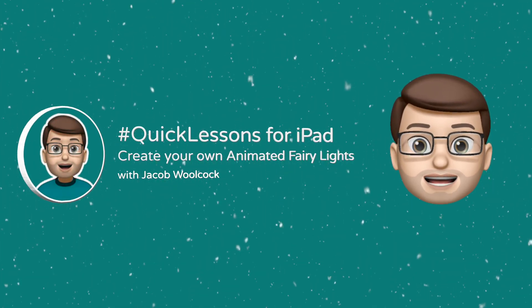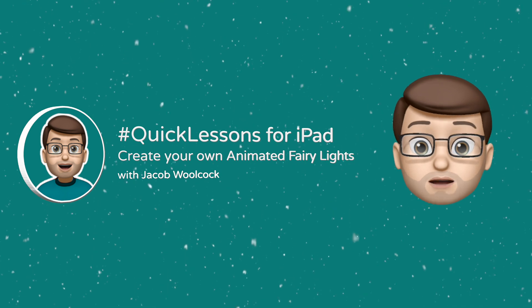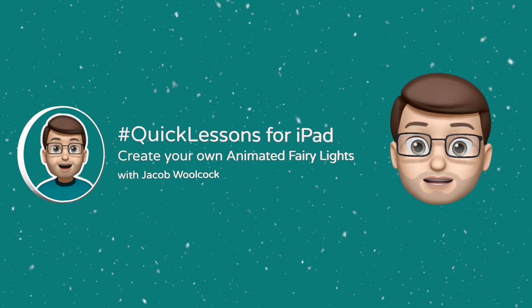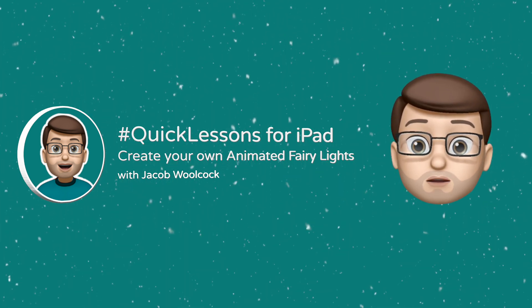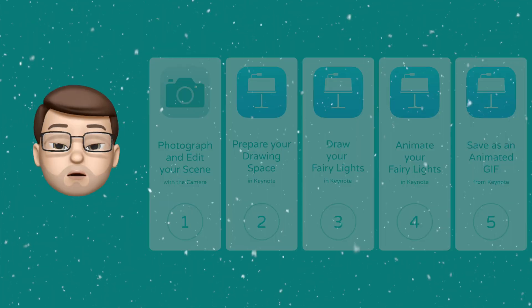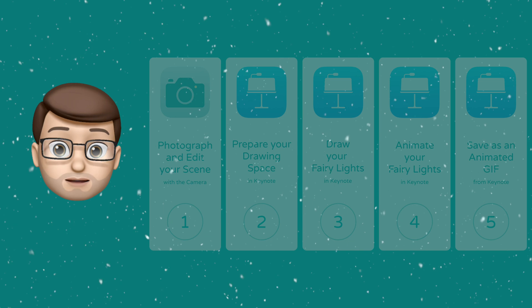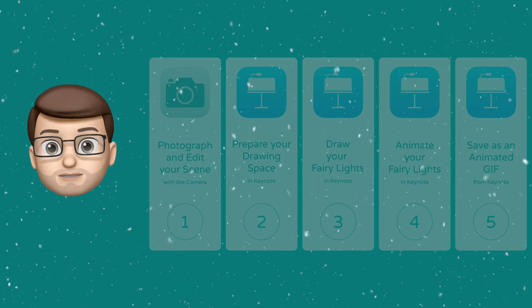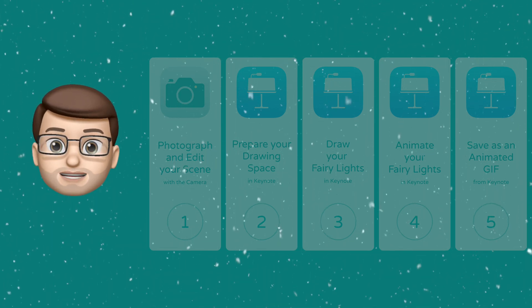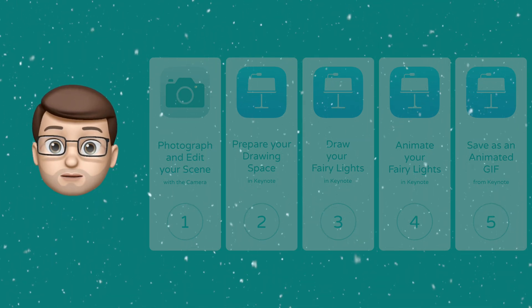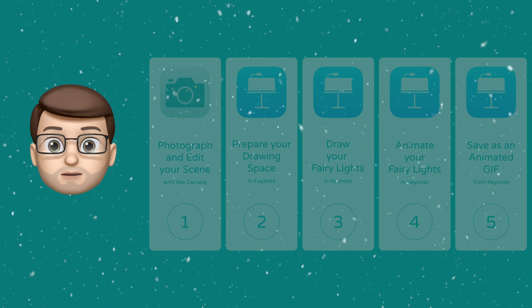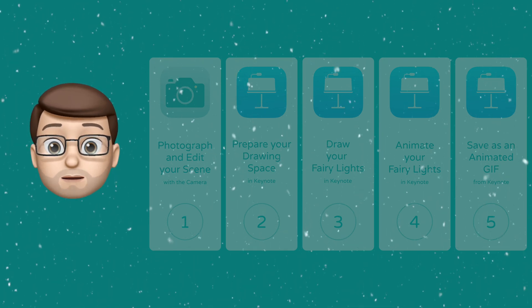In our quick lesson today, we're going to have a go at adding our own animated fairy lights to an object or room that you're in. We're going to do this together by following five easy steps. After each activity, you'll be able to pause it and then you can catch up before you move on to the next step.